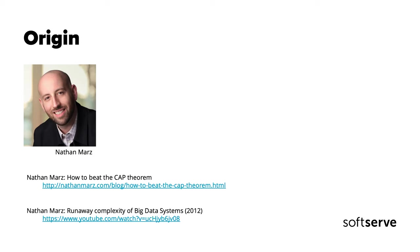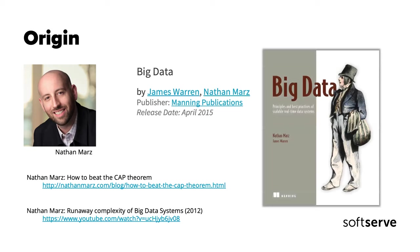The best resource for this architecture is his book, published in 2015 with James Warren by Manning Publications. It's called 'Big Data' and inside it thoroughly explains what Lambda Architecture is and how to use it, with many examples of various products and code to implement this architecture. This talk is an introduction, so I'll show you an overview without going too deep into all the decisions.